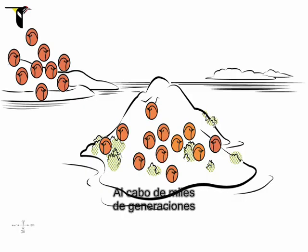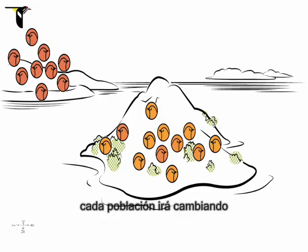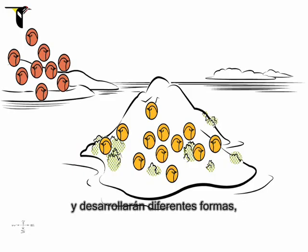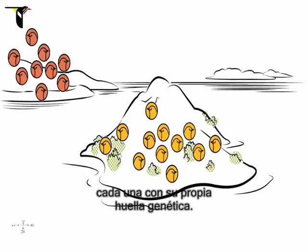Over thousands of generations, the two populations will be shaped by natural and sexual selection into separate forms, each with a unique genetic fingerprint.